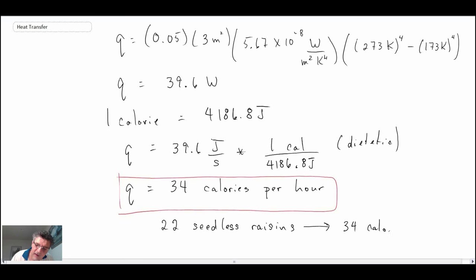So if this astronaut wants to maintain the overall balance and overcoming the heat loss, she would need to eat 22 raisins within an hour. So that's about a raisin every two minutes.